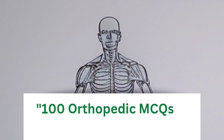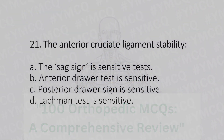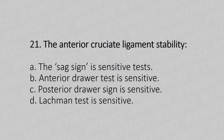Welcome to part 2 of this series. Now let's move to question number 21: The anterior cruciate ligament stability. Option A, the sag sign is sensitive test. Option B, anterior drawer test is sensitive. Option C, posterior drawer sign is sensitive. Option D, Lachman test is sensitive. And the answer is Option D, Lachman test is sensitive.